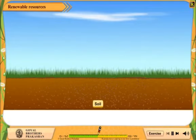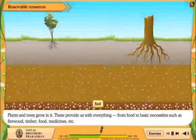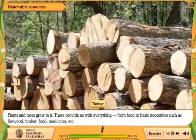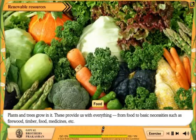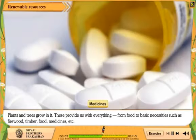Soil. Plants and trees grow in soil. These provide us with everything, from food to basic necessities such as firewood, timber, food, medicines, etc.